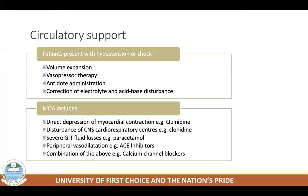Circulatory support is essential, as poisoned patients often present to the emergency department with hypotension or frank shock. Provision of circulatory support includes volume expansion, vasopressor therapy, antidote administration, and correction of electrolyte and acid-base balance.